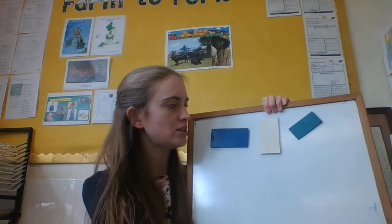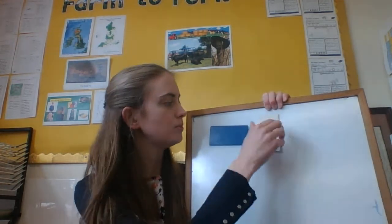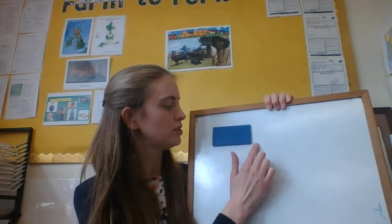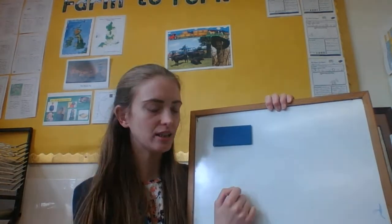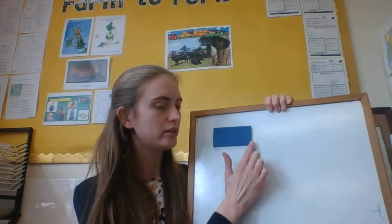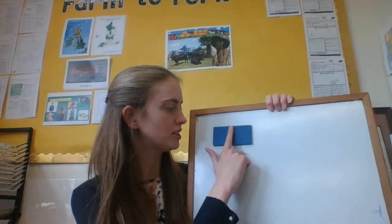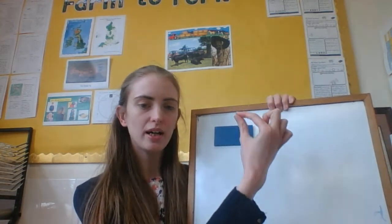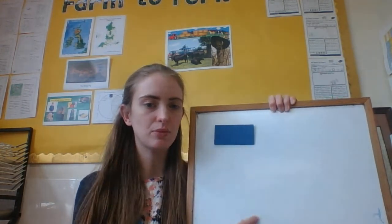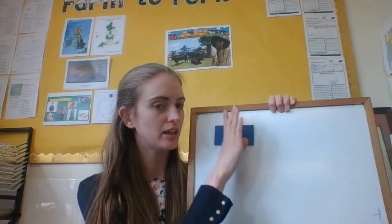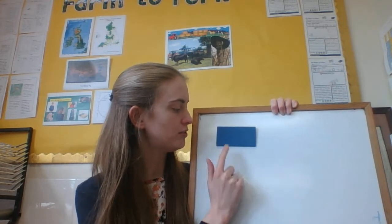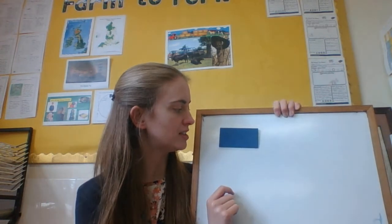So the first thing we're going to do today is recap what we know about rectangles. So we know they have 1, 2, 3, 4 sides, 4 vertices, 4 corners. And if I was to fold this rectangle here and here, it would match. So it has 2 lines of symmetry. It would be the same on both sides if I folded along those lines. So 4 sides, 4 vertices, 2 lines of symmetry.